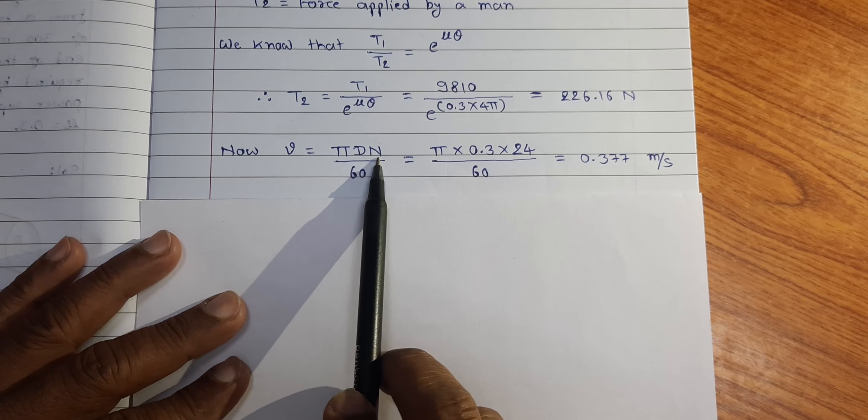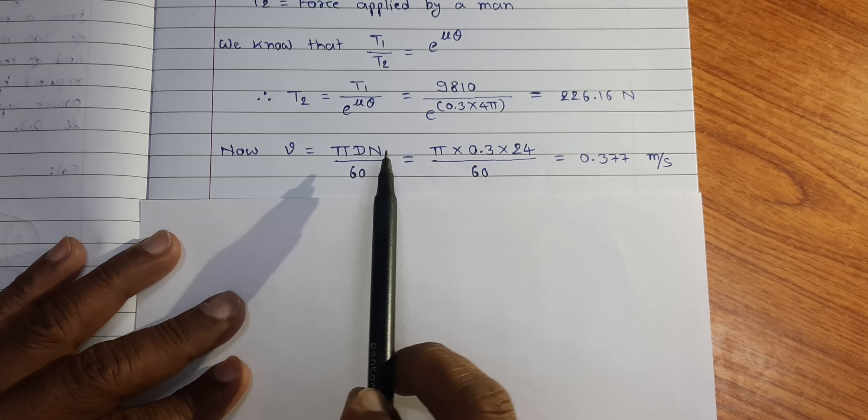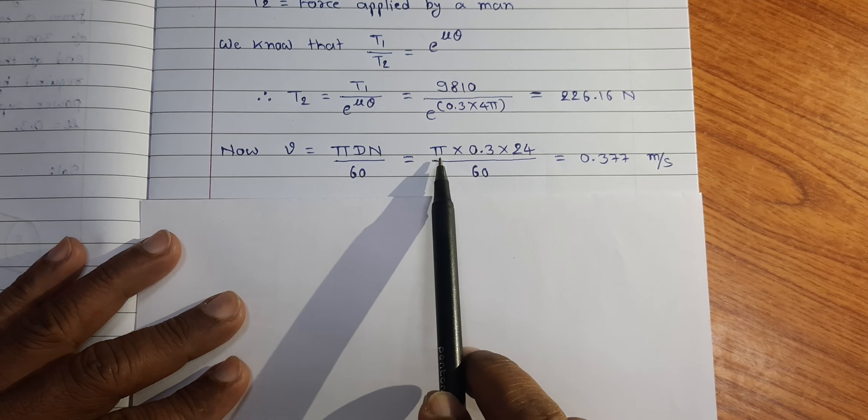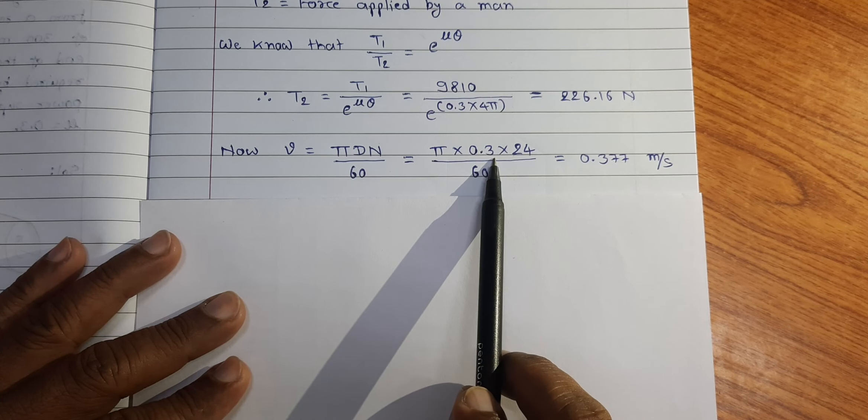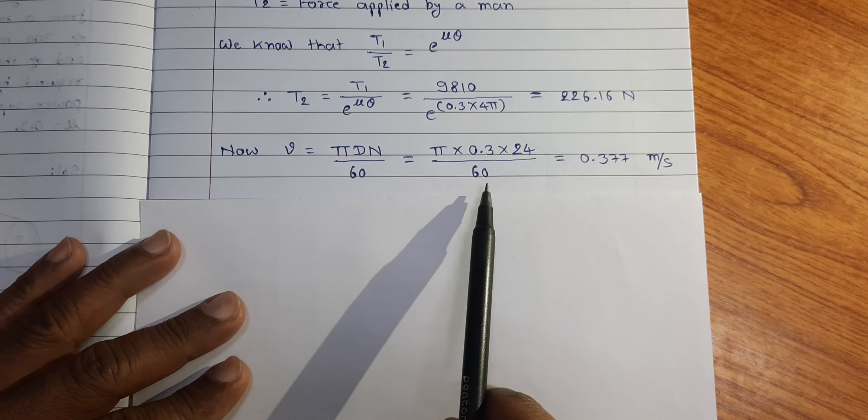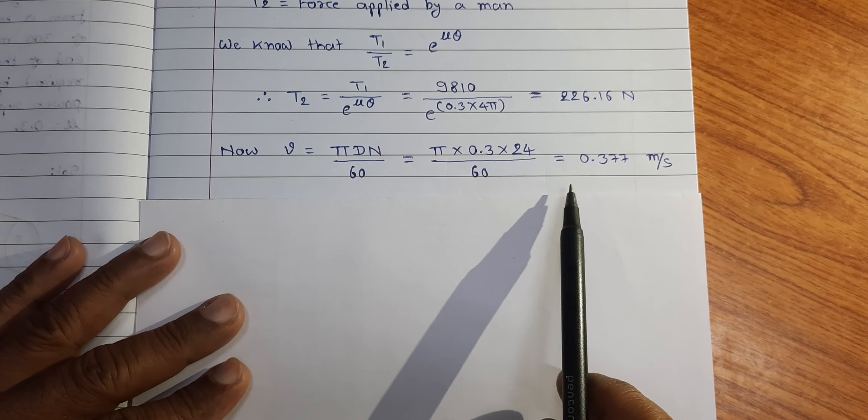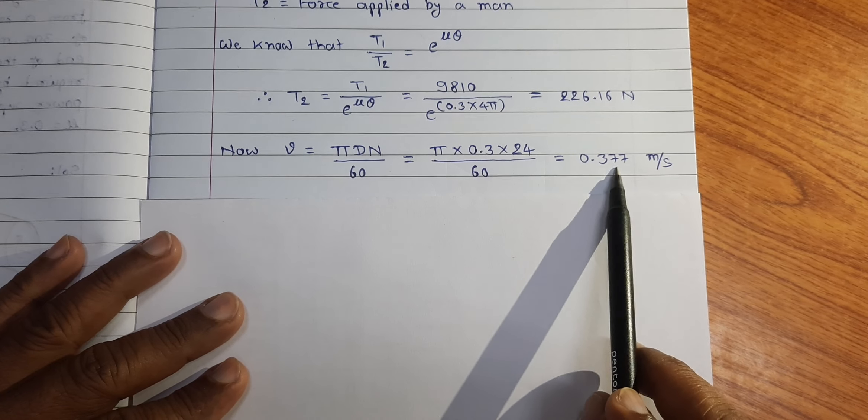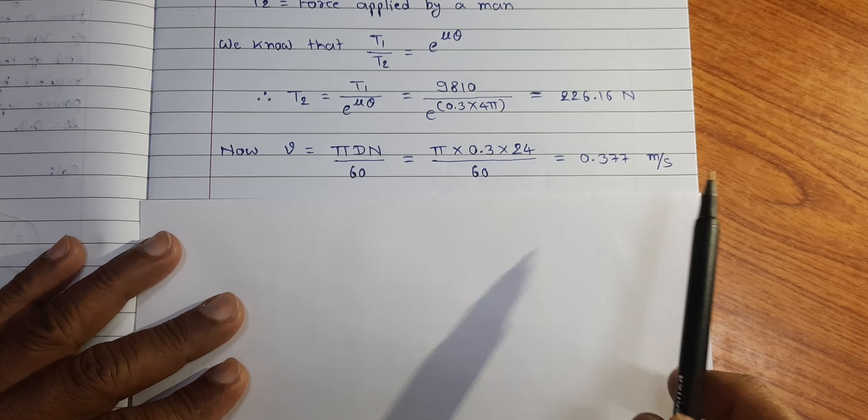Substituting these values pi it becomes pi into 0.3 into 24 divided by 60 on calculation we found is equal to 0.377 meter per second.